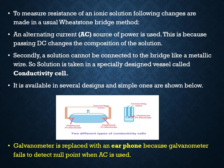Secondly, a solution cannot be connected to the bridge like a metallic wire. So, the solution is taken in a specially designed vessel called a conductivity cell. It is available in several designs, and simple ones are shown below. The galvanometer is replaced with an earphone, because the galvanometer fails to detect the null point when AC is used.